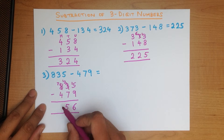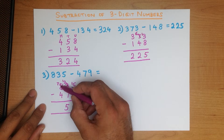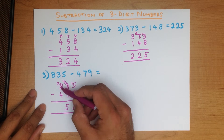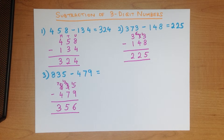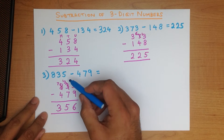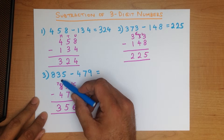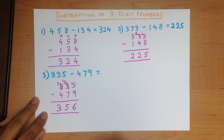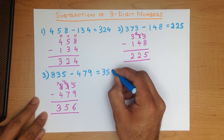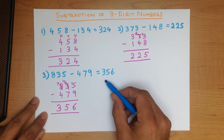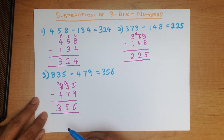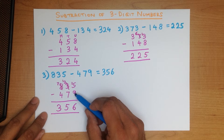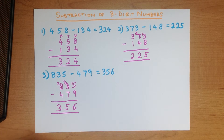Lastly, the hundreds column. We don't take away from 8 because the 8 has become a 7. So 7 minus 4 is 3, and we have our answer. 835 minus 479 is 356. It looks a little bit messy the first time, but once you practice these questions again and again it will become a lot simpler.